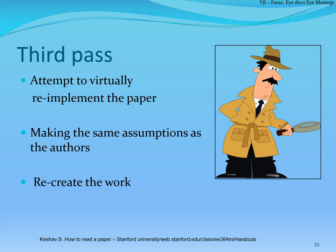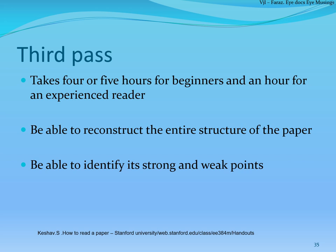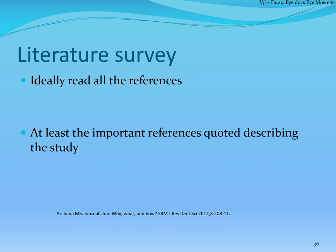The third pass involves going into the details of the paper and virtually re-implementing the whole study. You should think as if you were doing the study yourself — what would your methodology be, which parameters would you assess, and how would you assess the results. By the end of this pass you should be able to list the strong points as well as the fallacies of the study. The third pass might take close to four or five hours initially, but by the end you should be able to reconstruct the entire paper and identify its strong and weak points.